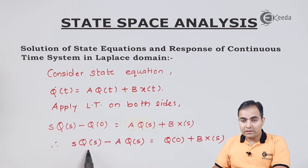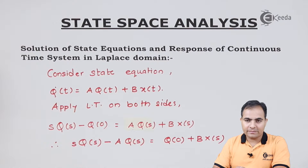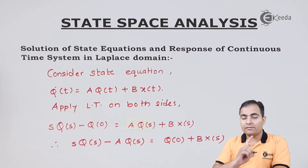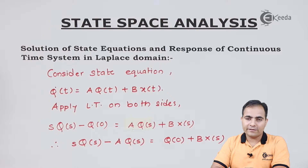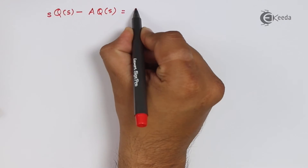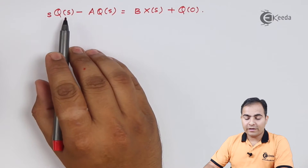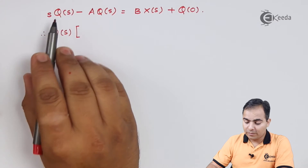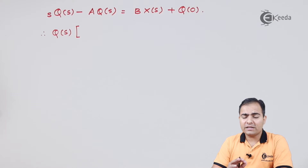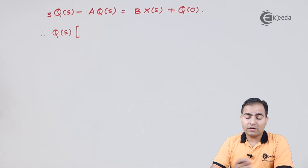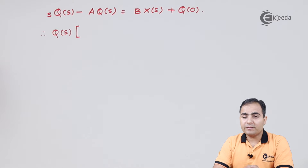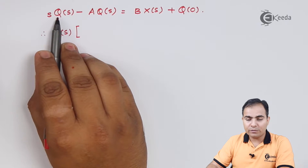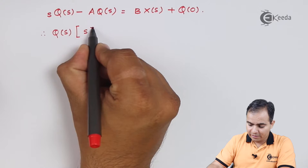From the left-hand side, we can take Q(s) common. But listen — Q(s) is a matrix, so if I take Q(s) common, the remaining place is replaced by one. This type of matrix is referred to as an identity or unity matrix, because its determinant is always 1. So we replace the scalar s multiplied by one with s times I, the identity matrix. So we write sI minus A.